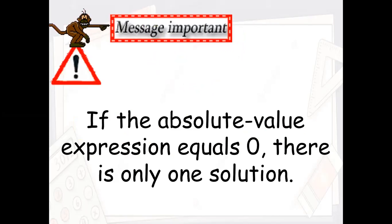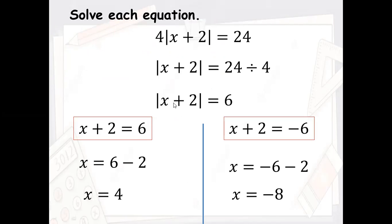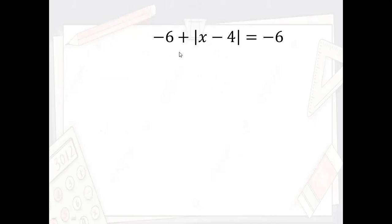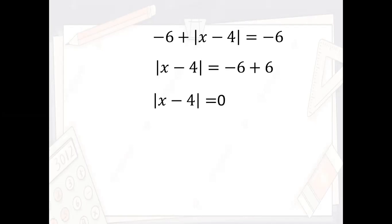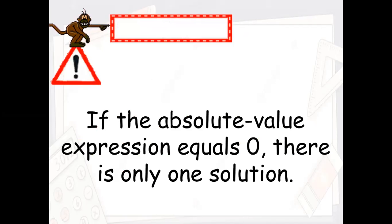Here's an important message: if the absolute value expression equals zero, there is only one solution. For example, if x plus two were equal to zero, there would not be two equations. Now, how do we solve this equation? You isolate the absolute value — minus six becomes plus six when moved to the other side, leaving us with the absolute value of x minus four equals zero.